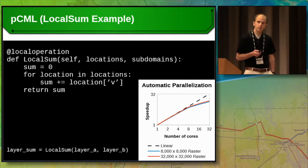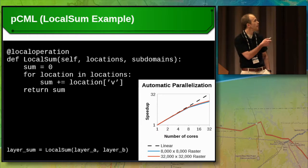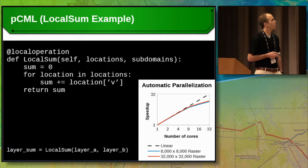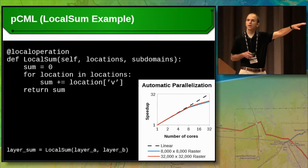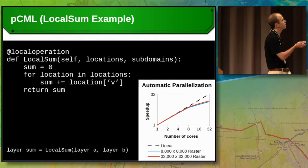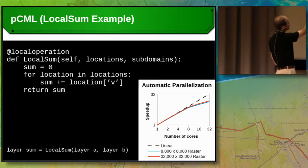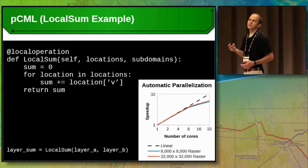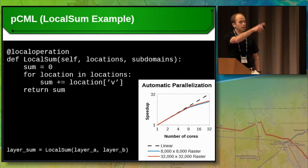To give a simple example illustrating the idea: we have a six-line implementation of local sum in PCML. The first line classifies your operation — local, focal, zonal, or global — which gives information to determine decomposition. The second line names the function, in this case local_sum, taking self, a list of locations, and a list of subdomains. Then we loop over all locations, extract a value, and add it to our sum. You can use it like any other Python function: local_sum(layer_a, layer_b, layer_c) — and you get automatic parallelization. It scales nearly linearly up to eight cores, so on most desktops and laptops it scales very well.